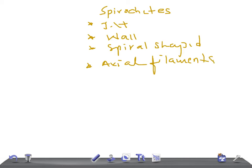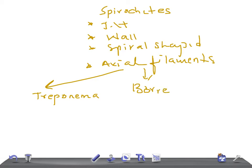In this category we have three important species: Treponema pallidum, Borrelia burgdorferi — which causes Lyme disease — and Leptospira.